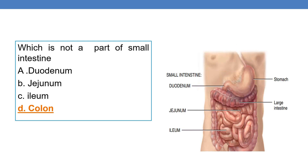Which is not a part of the small intestine? The options are duodenum, jejunum, ileum, and colon. Colon is a part of the large intestine, not the small intestine. The small intestine is made up of three parts: duodenum, jejunum, and ileum. So the correct answer is option D, colon.